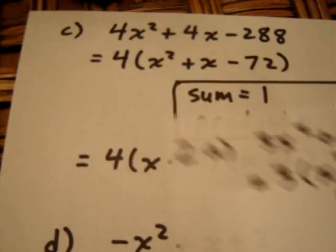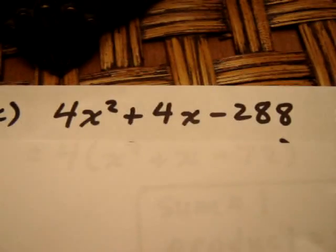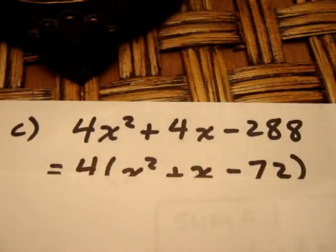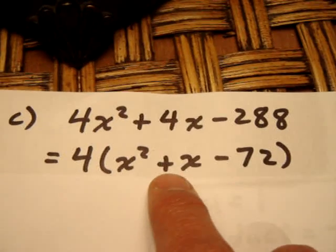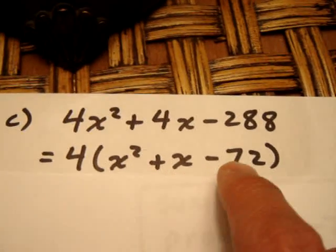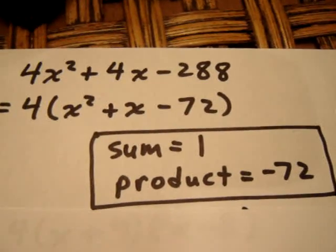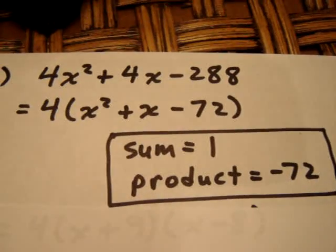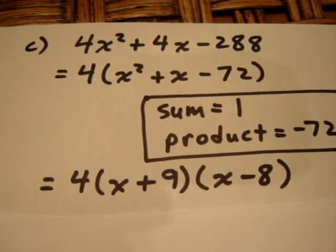Moving to our next question, letter C, we get 4x² + 4x - 288. That's a pretty big number on the end, but it is divisible by 4, so we can factor 4 out of each of the three terms. We get 4(x² + x - 72). So we want two numbers that add to 1 and multiply to negative 72. We're definitely looking for a positive and negative number. Well, those two numbers are positive 9 and negative 8. So we still remember to carry the 4 along, and we get 4(x + 9)(x - 8).